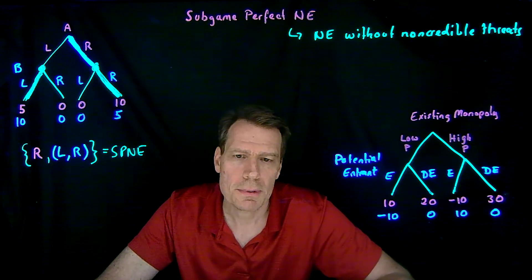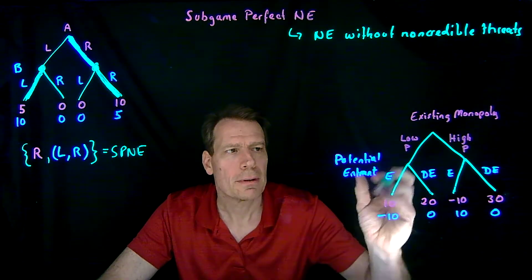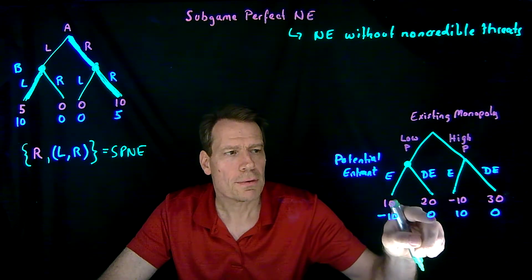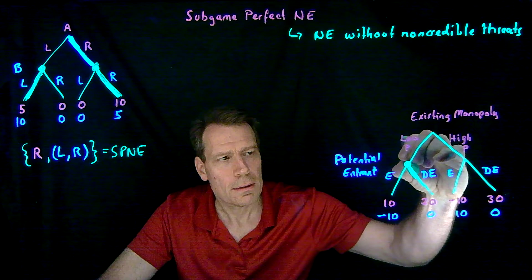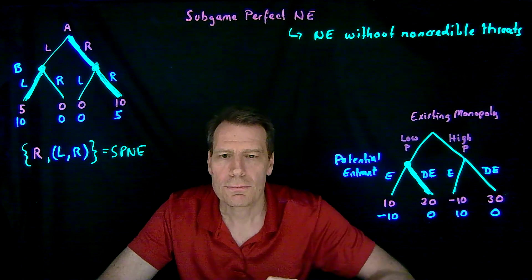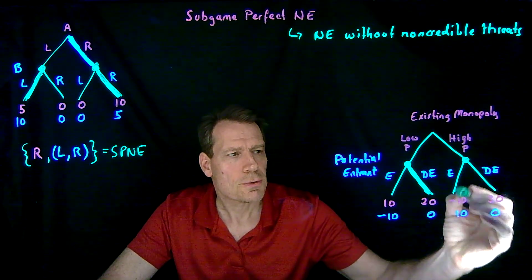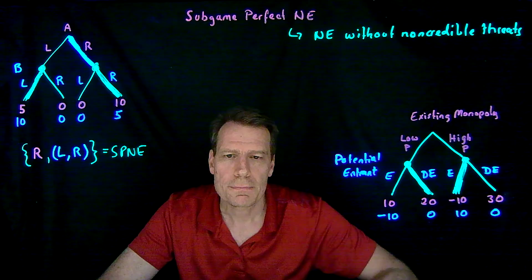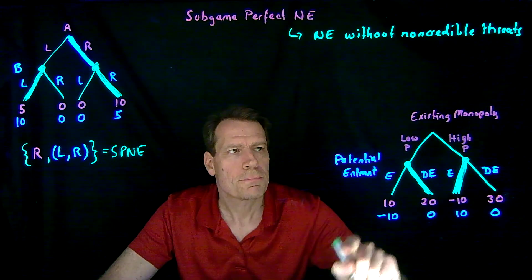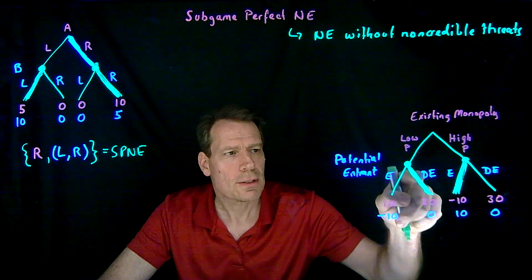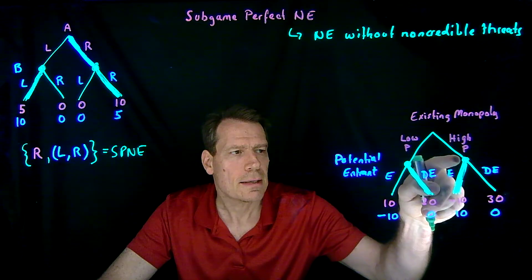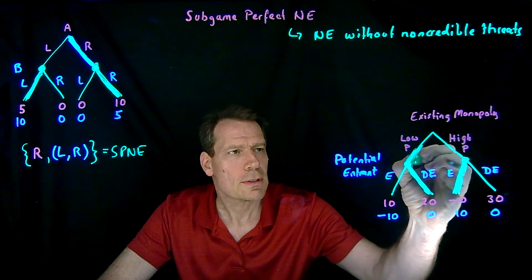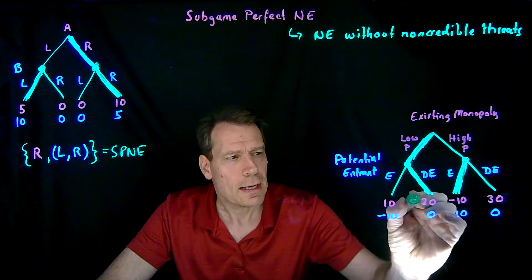So what's the subgame perfect Nash equilibrium in this case? All we have to do is start at the bottom and go up. If the potential entrant reaches the first node, it has a choice between a negative profit or zero — zero is better, so not entering is the best action from that node. From the second node, the entrant has a choice of a profit of 10 or zero, so its best choice is to enter. The existing monopoly can see what's going to happen later: if it prices low it ends up here, if it prices high it ends up here. Minus 10 is certainly worse than 20, so the existing monopoly's subgame perfect strategy will be to price low.